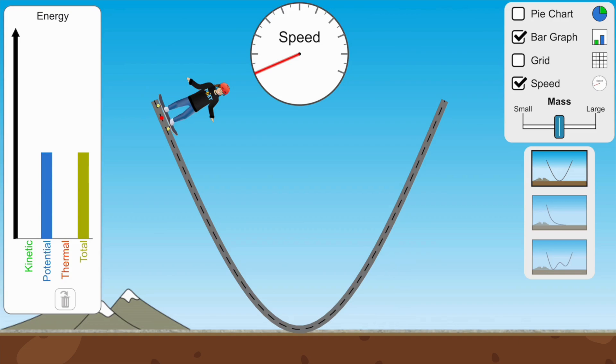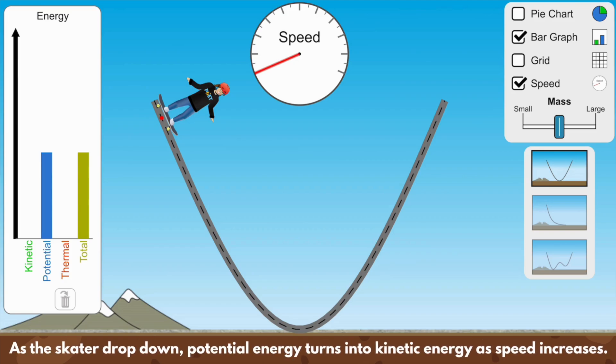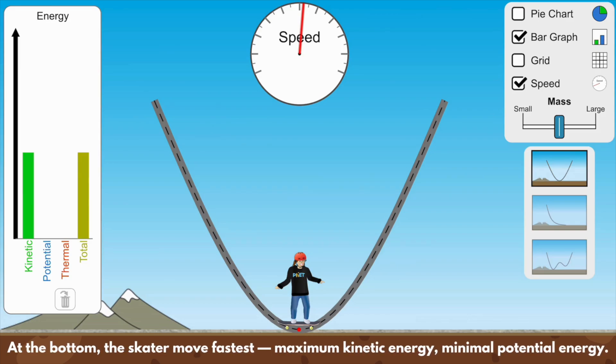Imagine a skater on a U-shaped track. At the top of the ramp the skater starts with all potential energy and no kinetic energy. As they drop down that potential energy transforms into kinetic energy as they speed up downward. At the bottom they are moving the fastest with the most kinetic energy and the least potential energy.